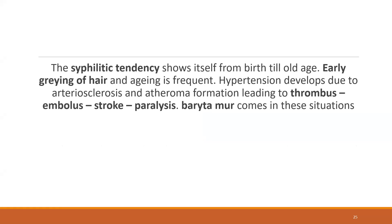Coming to the final stages in old age: old people, especially those suffering from a stroke, we can think of Baryta — especially when the BP is high, that is the time to think of Baryta. There is early greying of hair, frequent aging, and hypertension develops due to arteriosclerosis. Then there is thrombus formation, embolus, stroke, and paralysis — a chain of events which happens.